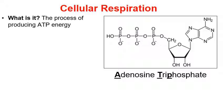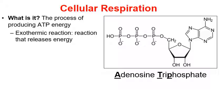So cellular respiration — what is it? Well, ultimately it's a cellular process that ends up producing adenosine triphosphate, abbreviated ATP. This is a molecule that provides your cells with the energy that they need to do work. Understanding how cells make their energy is actually a really important concept in biology. One thing to mention is that cellular respiration is an exothermic chemical reaction — it's one that releases energy.